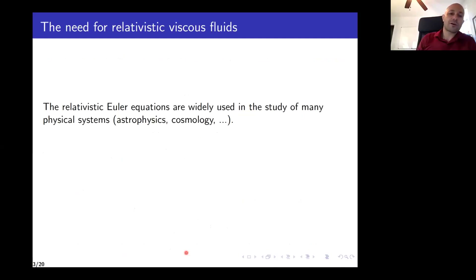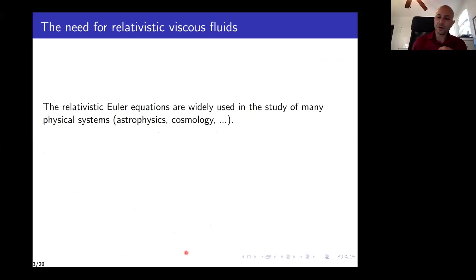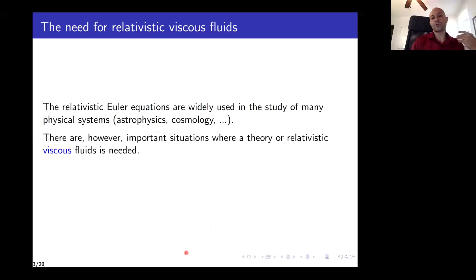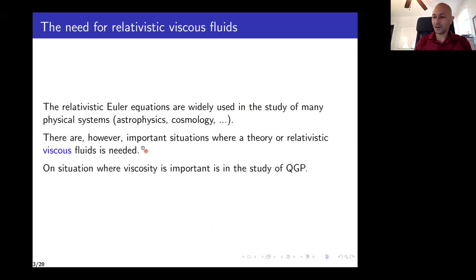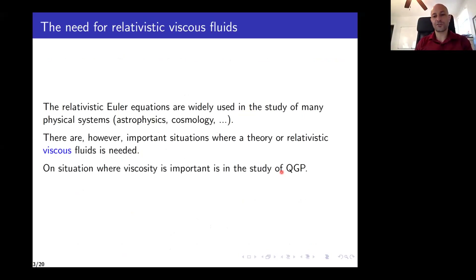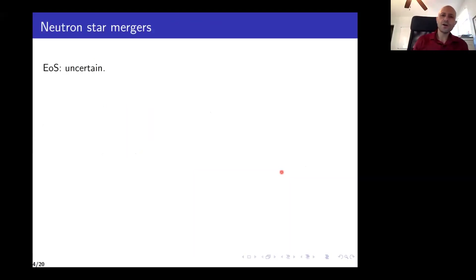The relativistic Euler equations are widely used in the study of many physical systems. However, there are important situations where we need a theory of relativistic viscous fluids. One such situation is of course the quark-gluon plasma, which has been extensively discussed in this workshop. Another important situation, related to the title of my talk, is the study of neutron star mergers.